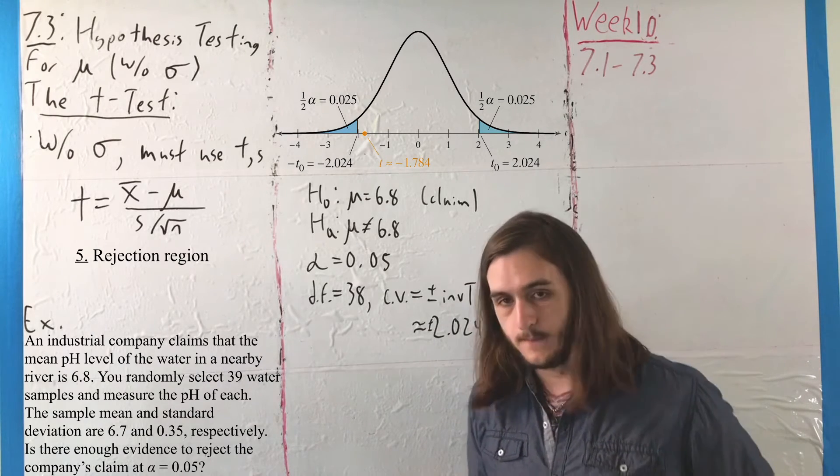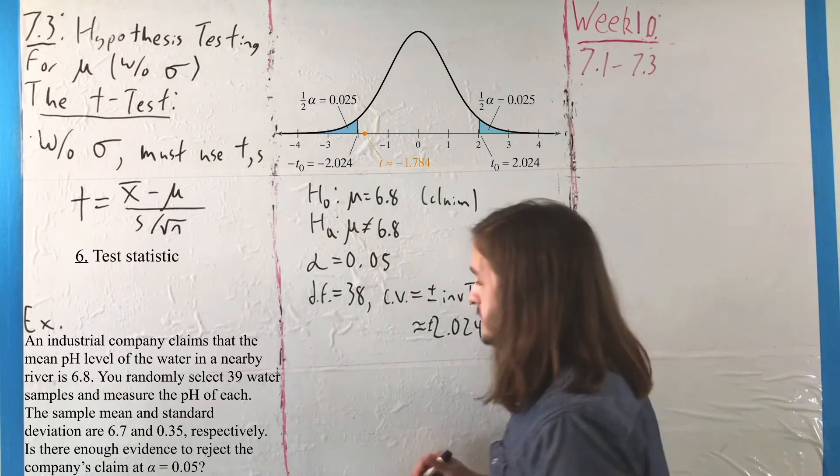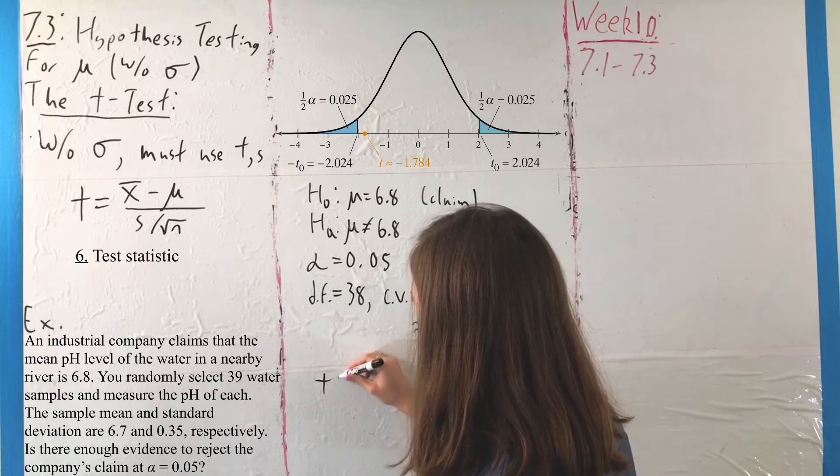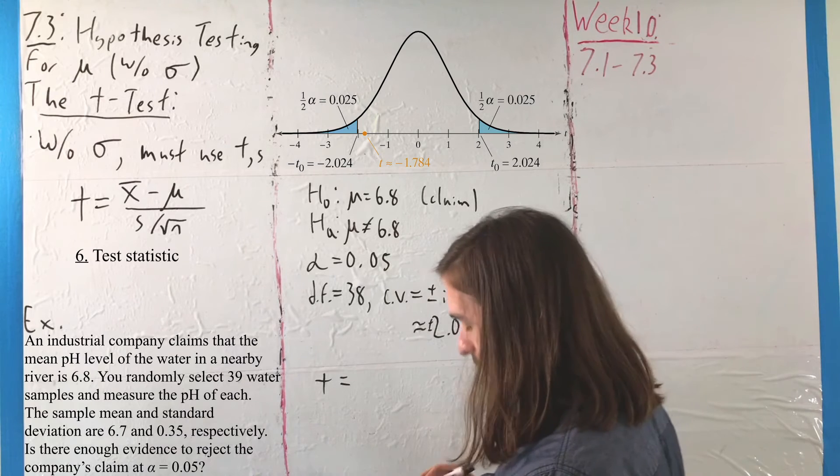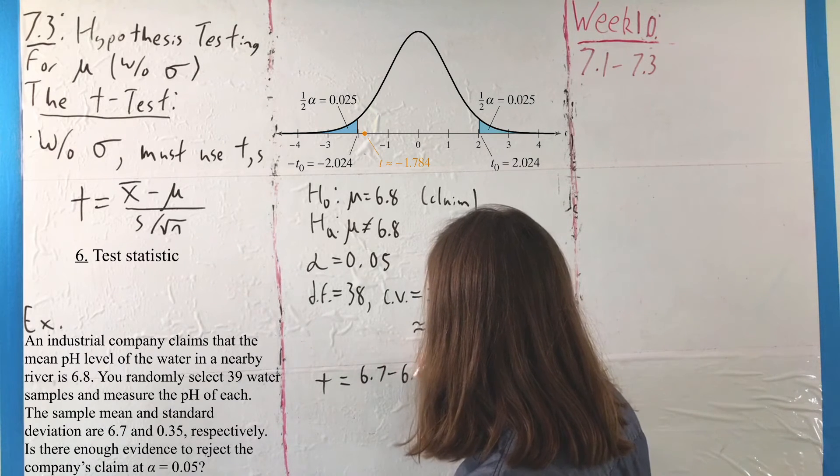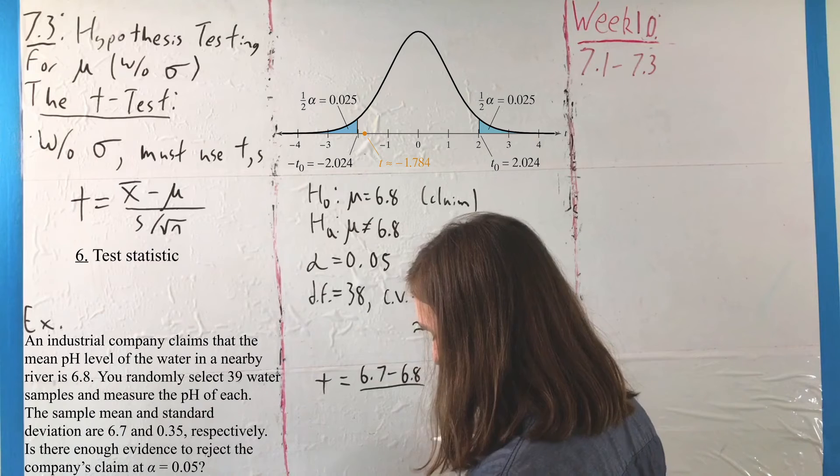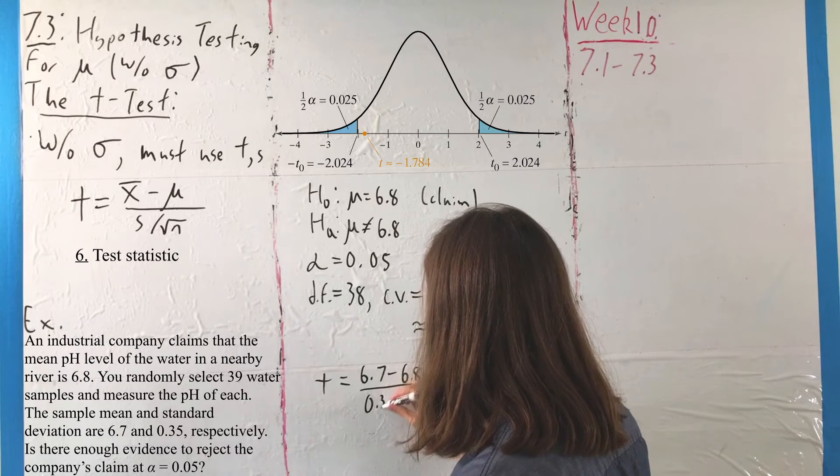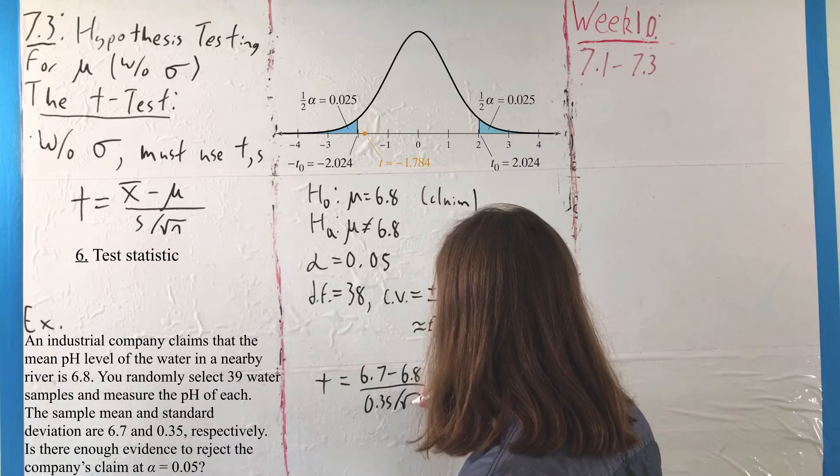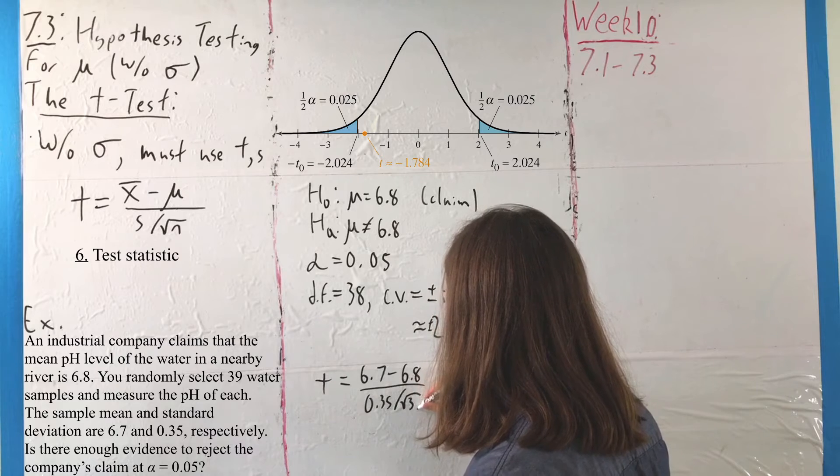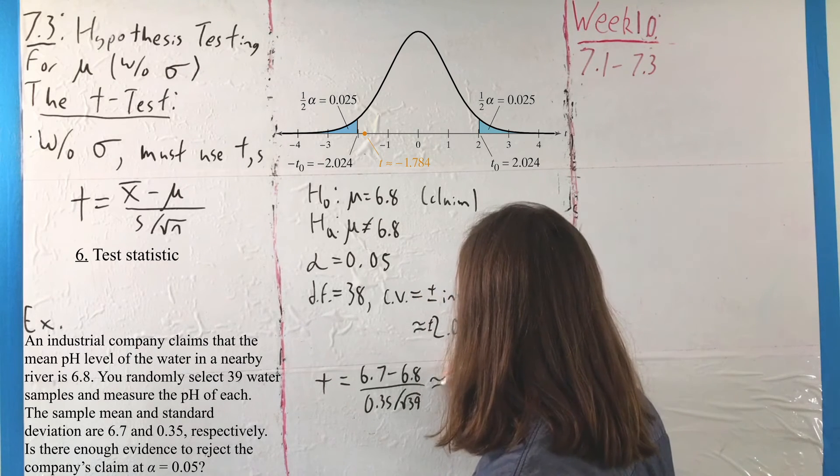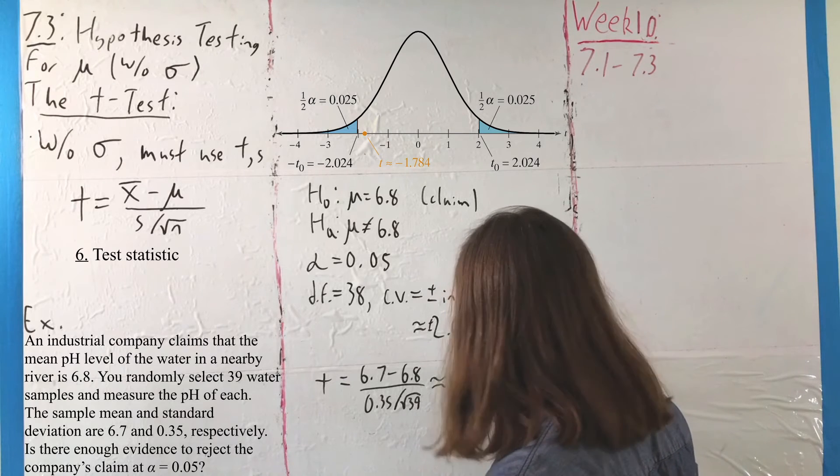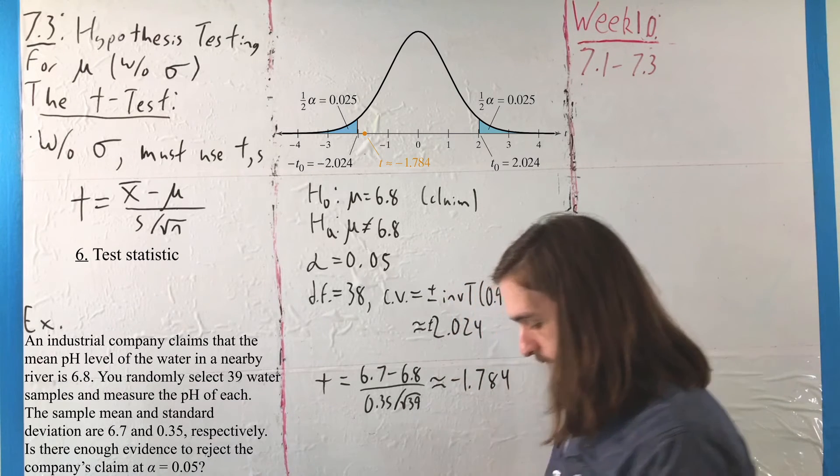And then, from there, we can talk about our T value. That is, our test statistic here, where we're going to use that same formula that we have in the others. That's going to be 6.7 minus 6.8 over S, 0.35, divided by the square root of N, where here, N is 39. So, you run that, and you'll get that T is approximately negative 1.784.